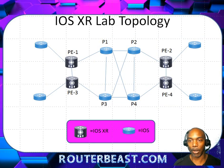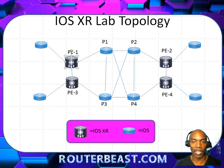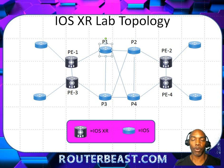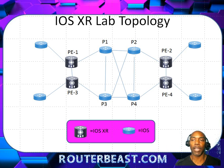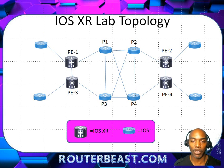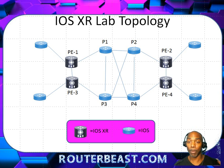In this lab we're going to be using a topology that includes both IOS XR devices and IOS devices. We've got the PE1 and P1 routers that will be used for demonstration. This topology will continue to build out as we move forward to build MPLS provider cloud. The routers out here will be configured as customer edge routers, but the XR devices are going to be the PE — provider edge — routers.